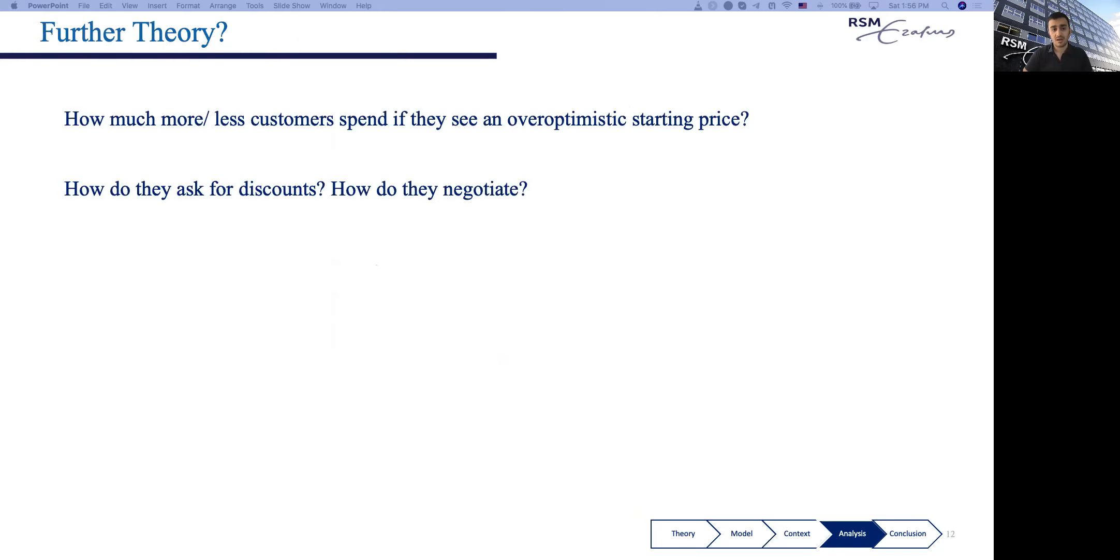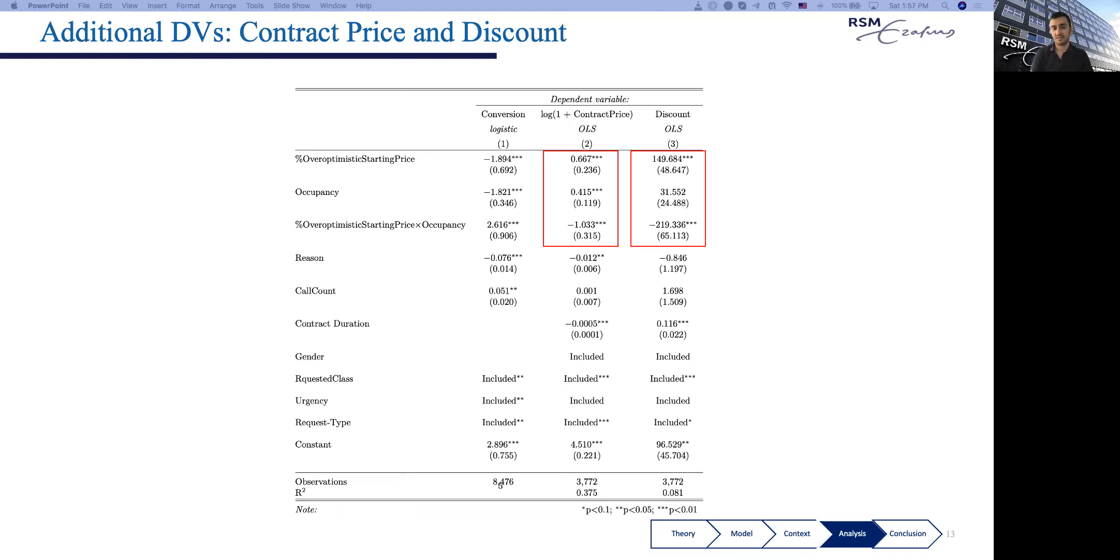As for further theory, remember that when starting prices are overoptimistic, it means the skewness is negative and prices are located around higher prices. We expect that if a customer rents in that case, they will rent products with higher evaluation, closer to other available products in the range. So we expect them to spend higher. But since they're doing it with a sense of disappointment, we expect this will have a further spillover effect on their negotiations to get more discount. When they try to rent, they ask for discounts through human negotiation. Let's see what happens on contract price and discount. The expectation is they're going to spend higher amounts, as you can see here. But this effect is also compensated by the occupancy.